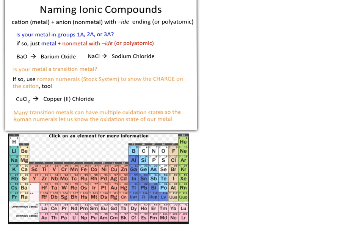For example, BaO: barium is from group 2A, so we write barium. Oxygen becomes oxide, so BaO becomes barium oxide. For NaCl, sodium is from group 1A, so we follow the same protocol. Sodium gets written first, and chlorine becomes chloride, giving us sodium chloride. That's the basic approach to ionic compounds with metals from groups 1A, 2A, or 3A.